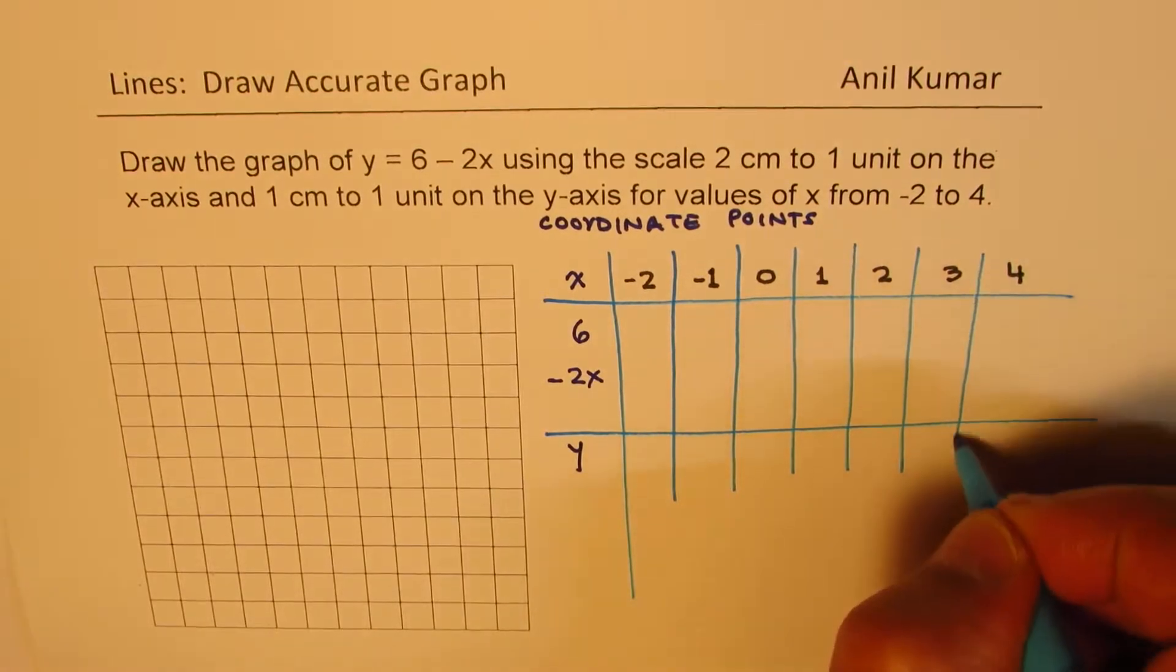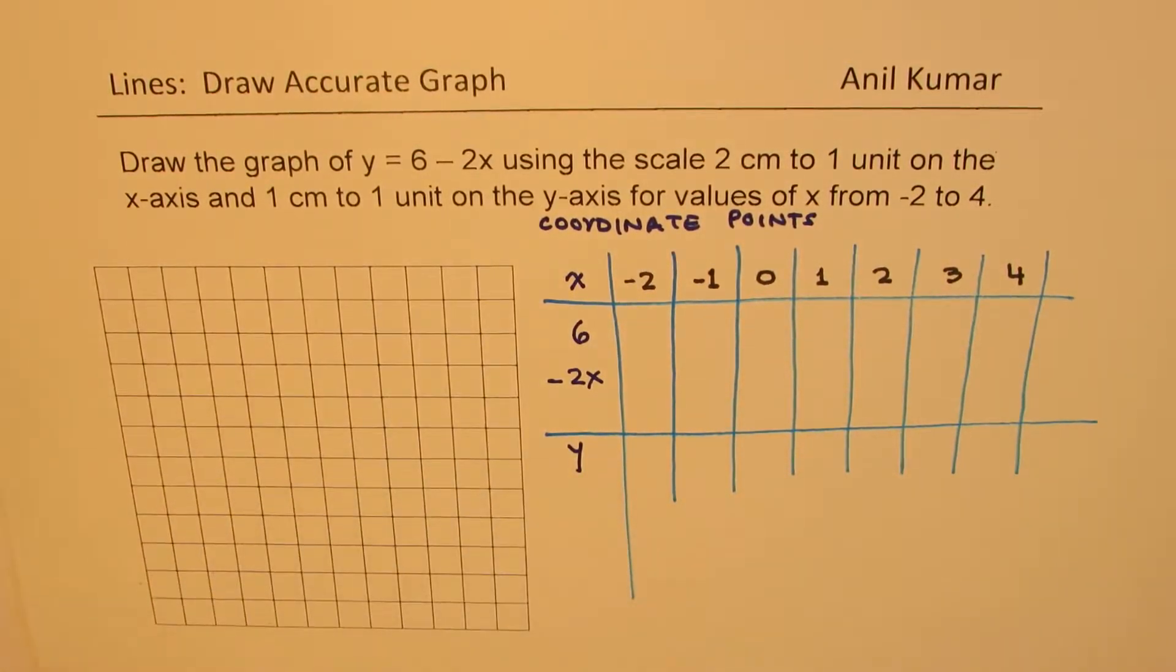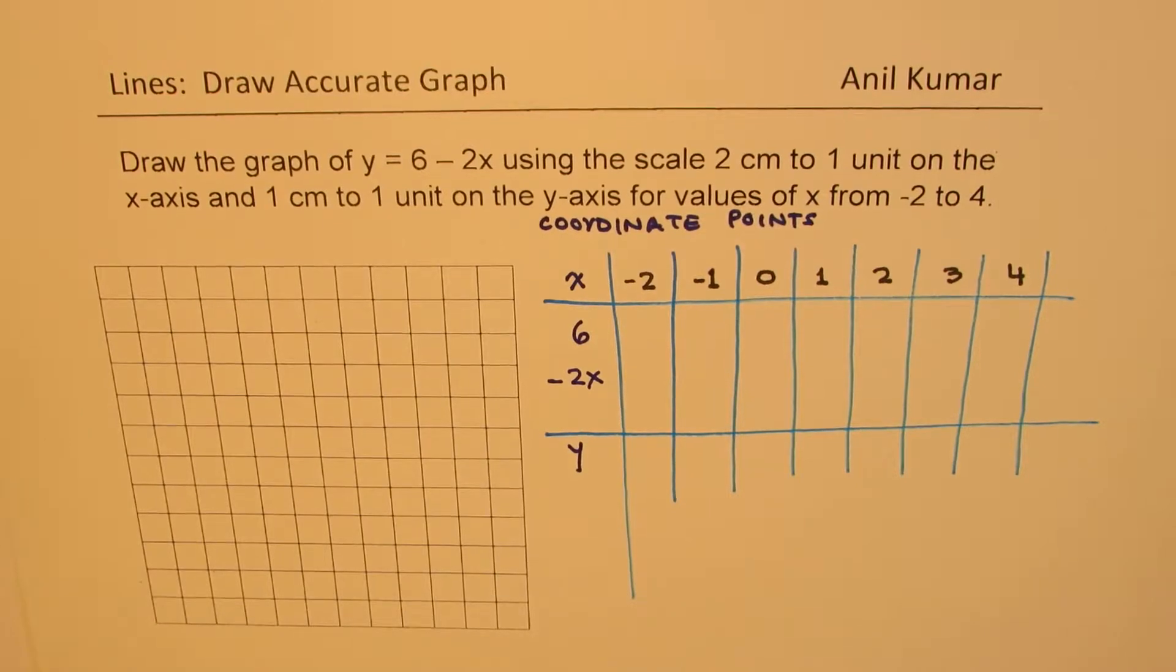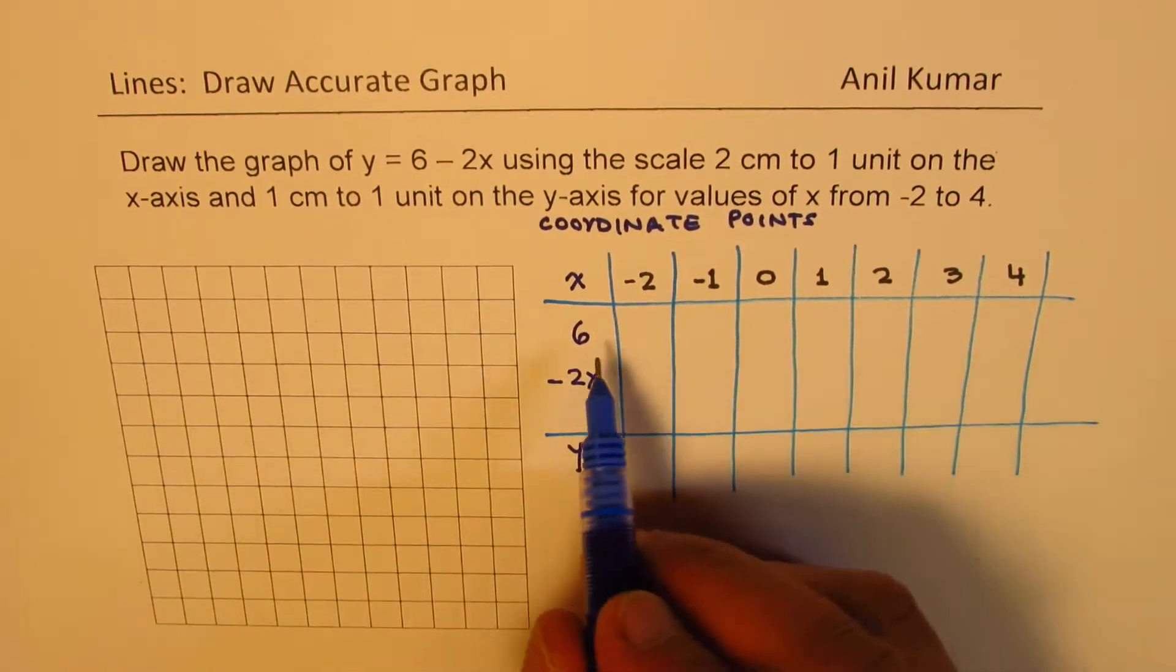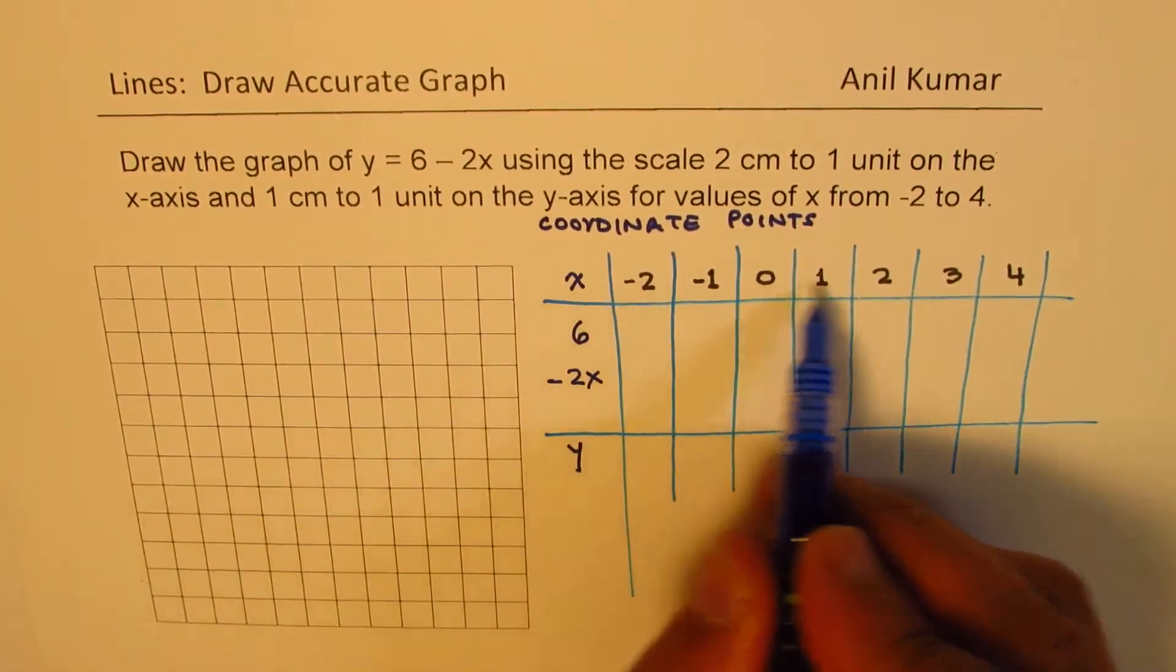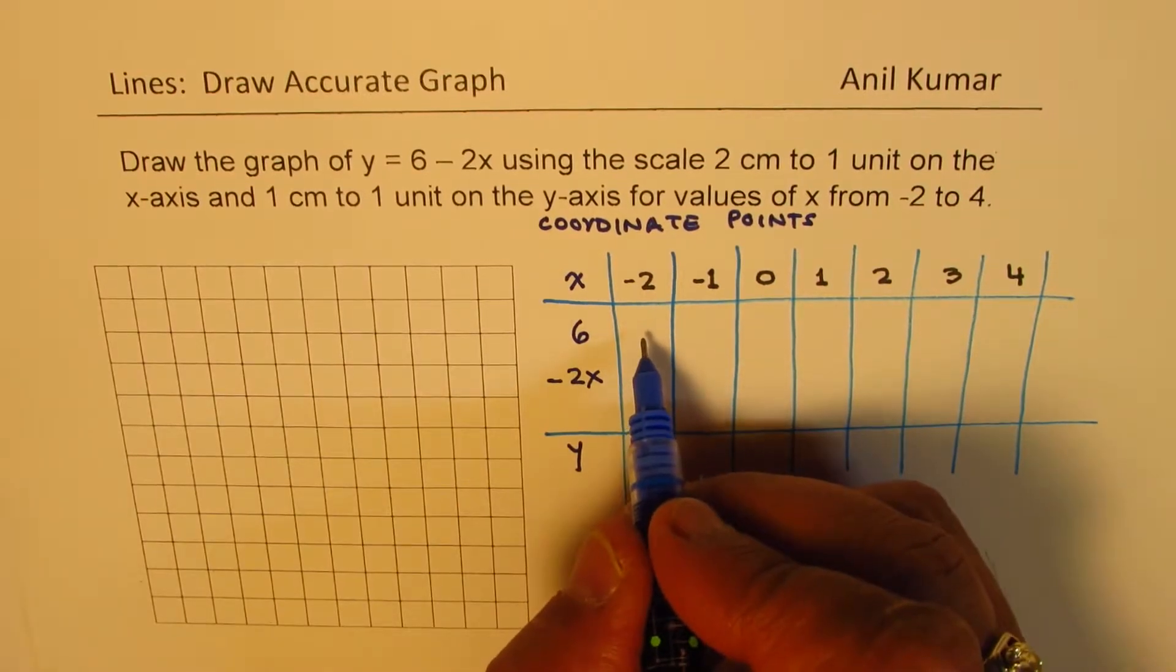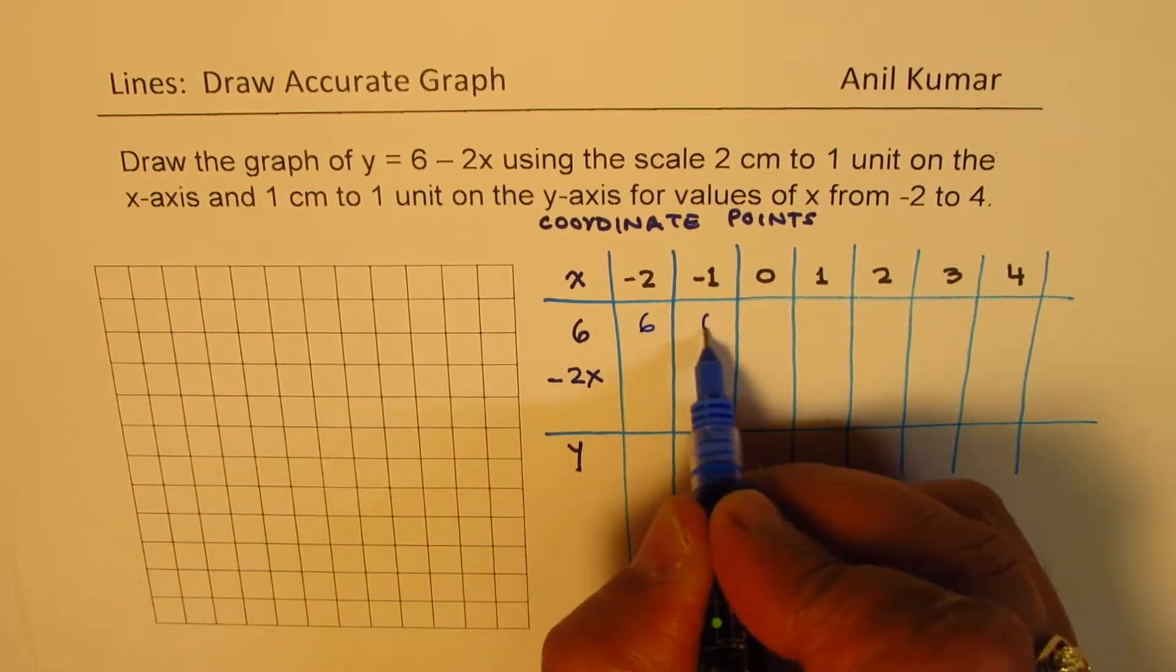Once we get these coordinate points, then we will decide about the axis. So as far as 6 is concerned, whatever is the value, 6 is going to be constant. So let me write 6 for each one of them.